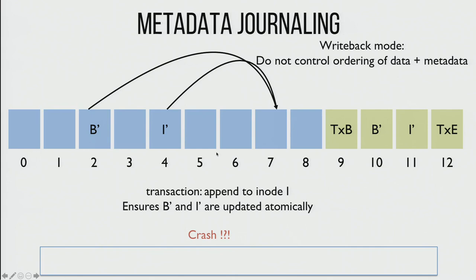There are two different types of metadata-only journaling. One is called write-back mode — the sloppiest type — where you don't worry about when you write out user data versus metadata. It gives the best performance but bad semantics. We're still careful to put bitmaps and inodes in our transaction, but we do nothing about user data ordering. What happens if we wrote out our transaction all the way to the commit block, did our checkpoint, and then have a crash and recovery?